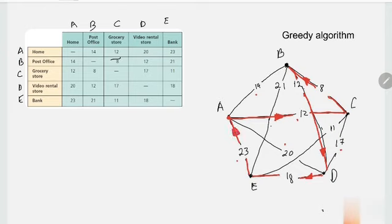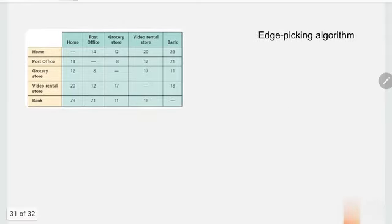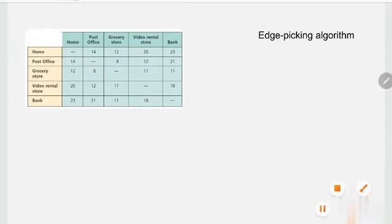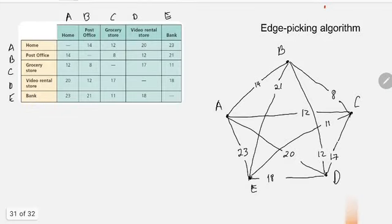So 12 plus 8 plus 12 plus 18 plus 23. Let's reveal the sum later on. Let's do the edge picking algorithm. Let me just copy that graph. Okay, there you go, I have the graph now.